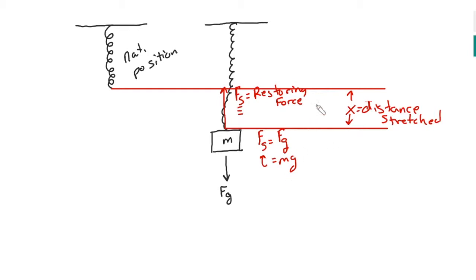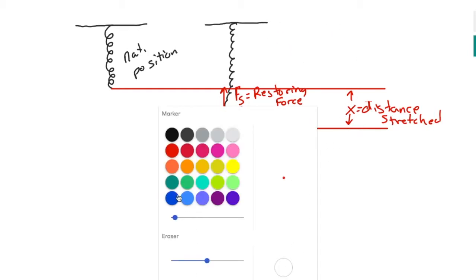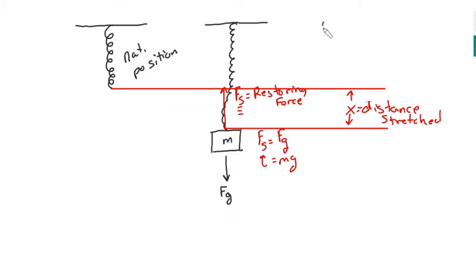Now, don't be confused by this total length here. We don't want to look at the length from the ceiling, not to be confused with this. This is not X. So we're looking at just the difference from the initial position to the final position. That's how we're going to solve for X, and this is going to be called the distance stretched or in some cases compressed or made smaller.